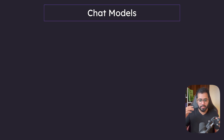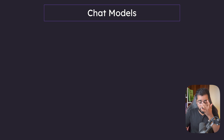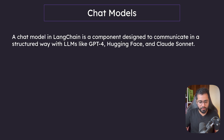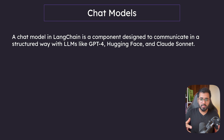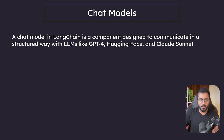In this section, let us look at the first core component of LangChain, which is called chat models. A chat model in LangChain is a component designed to communicate in a structured way with LLMs. The LLMs could be GPT-4, it could be Hugging Face, an open source LLM, it could be Claude Sonnet APIs. Chat models in LangChain offer an interface that you can use to communicate with pretty much any LLM that you want.